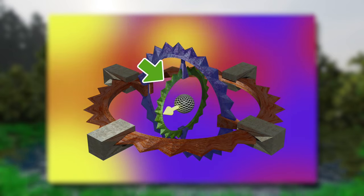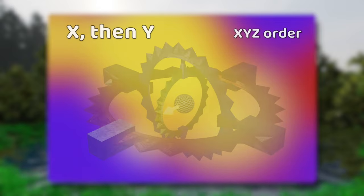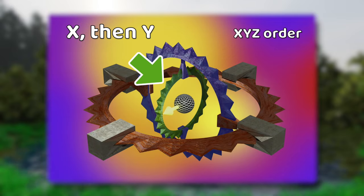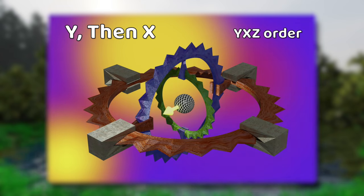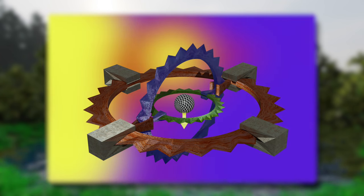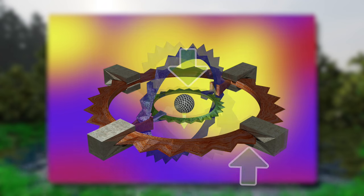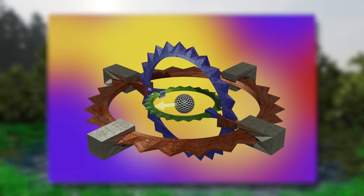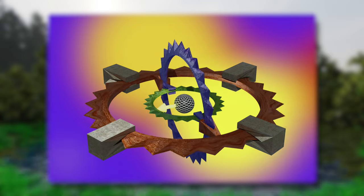How does that even happen? We can visualize Euler order by using three nested rings around an object. The innermost ring is the first value and the outermost is the last. Each ring rotates and when it does, it affects everything inside of it. This happens whenever the middle value rotates 90 degrees — if we were to rotate the outermost ring, we get the same change as when we increase the value for the middle ring. So two values now represent the same thing, and we basically lose a whole dimension of rotation because Euler cares about order.